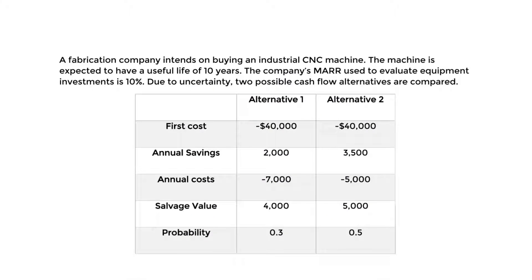Let's do an engineering economics FE type question for expected values. These expected values relate to the return we can expect after taking some kind of action. In engineering economics, we're mostly concerned with cash flows, so we will attach a probability to each cash flow case, and the end goal is to compare two alternatives.